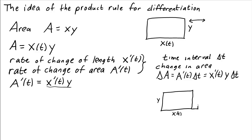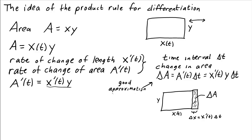So here we imagine the picture. The amount that the length changed is delta x, which is x prime times delta t — the rate of change of length times the time interval. So the amount that the area changed is this shaded rectangle. This is a good approximation for small delta t.